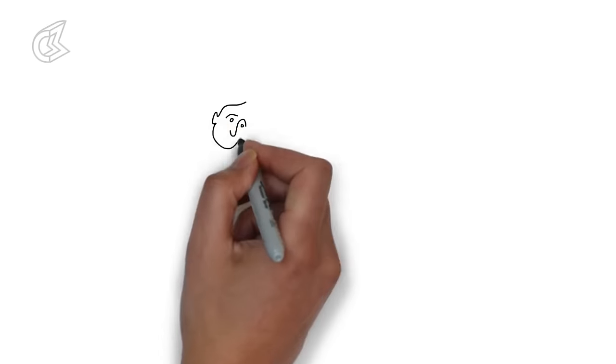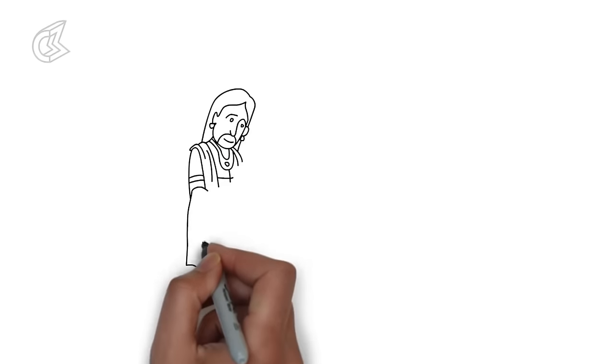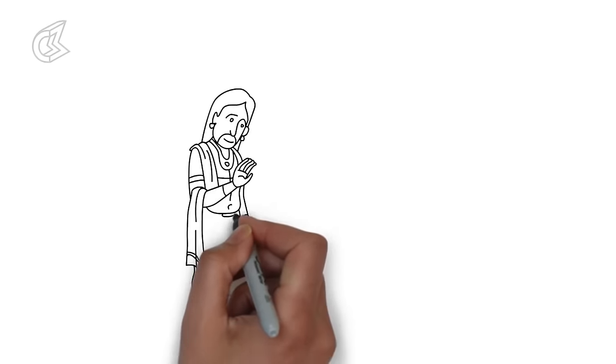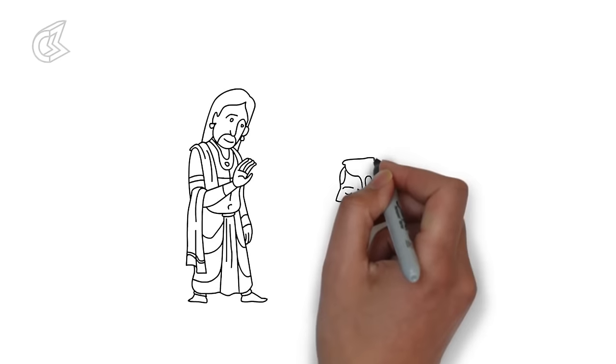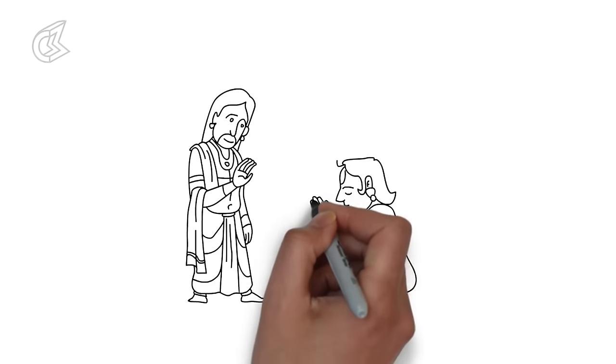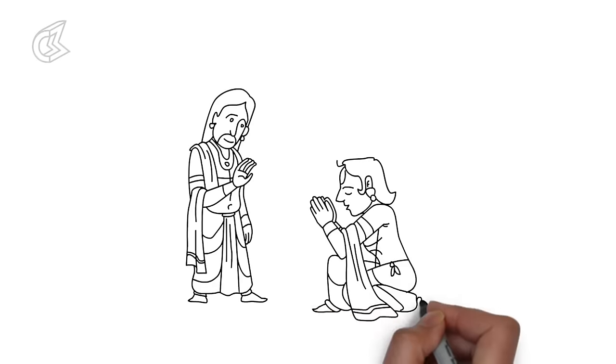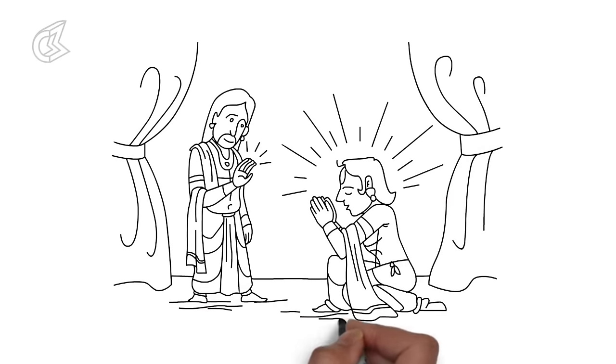However, he recognized his son's sacrifice and granted him a boon. He declared that his virtuous son would be able to choose the moment of his death. Without his consent, death will not be able to touch him.